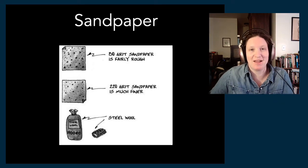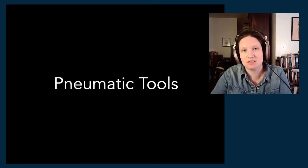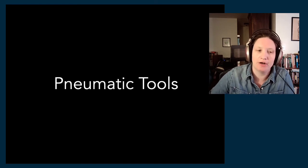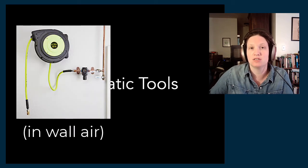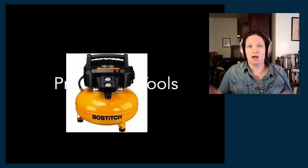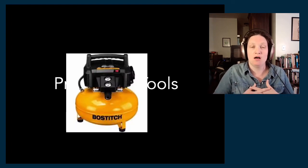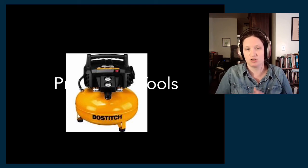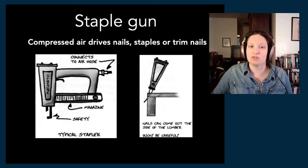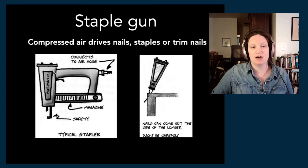The next kind of tools we use are pneumatic — air powered tools. In the scene shop at school and in any big venue scene shop, we'll have air compressors built into the wall with hoses that allow you to tap into a wall line of pressurized air. Otherwise you'd have an air compressor on site, usually plugged into the wall, generating a tank of compressed air to drive this kind of tool. The one you'll use the most is a staple gun, where compressed air drives nails, staples, or trim nails into your material.